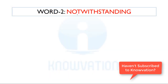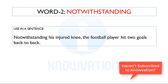The next word is Notwithstanding. Let's see the first sentence: 'Notwithstanding his injured knee, the football player hit two goals back to back.' So we know the person was injured but still made two goals. We can see that 'notwithstanding' is somehow negating that part — even though he had an injured knee.